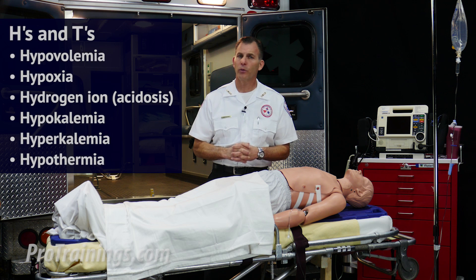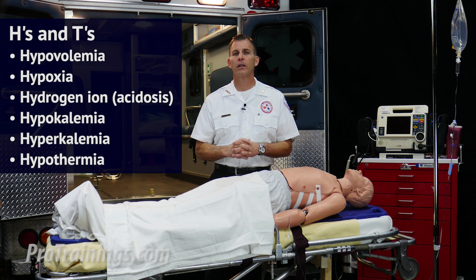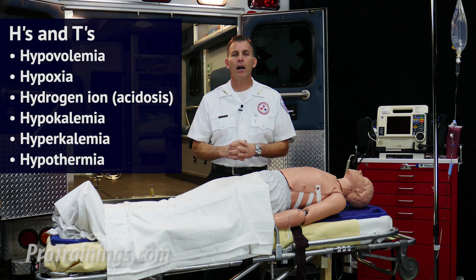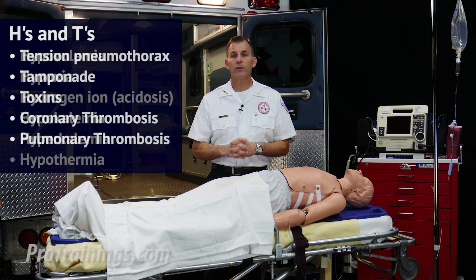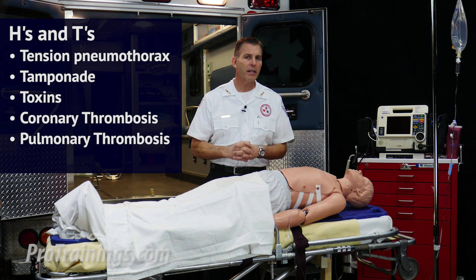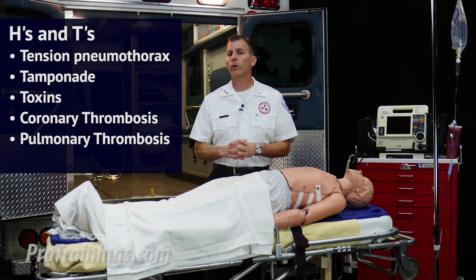The reversible H's and T's include hypovolemia, hypoxia, hydrogen ion (acidosis), hypo- or hyperkalemia, tension pneumothorax, cardiac tamponade, toxins, and cardiac or coronary thrombosis.